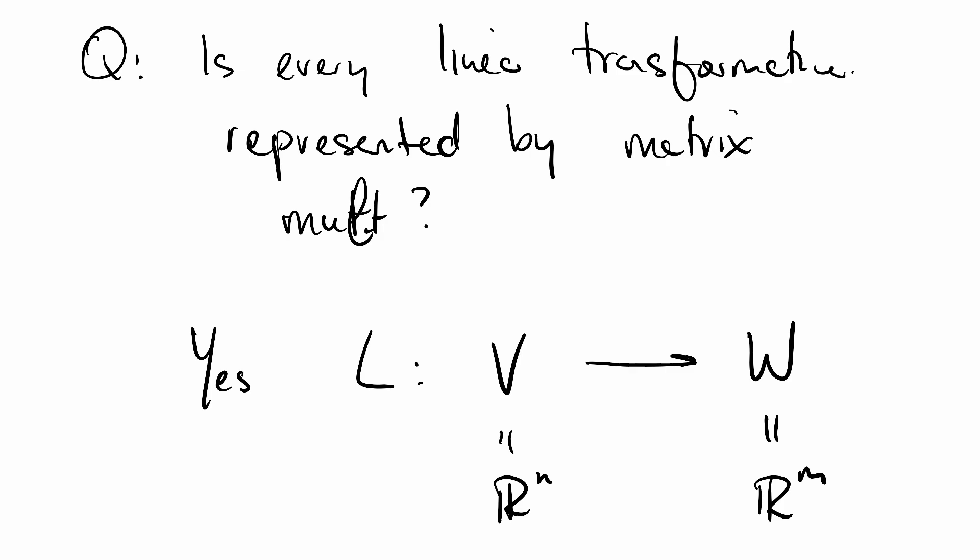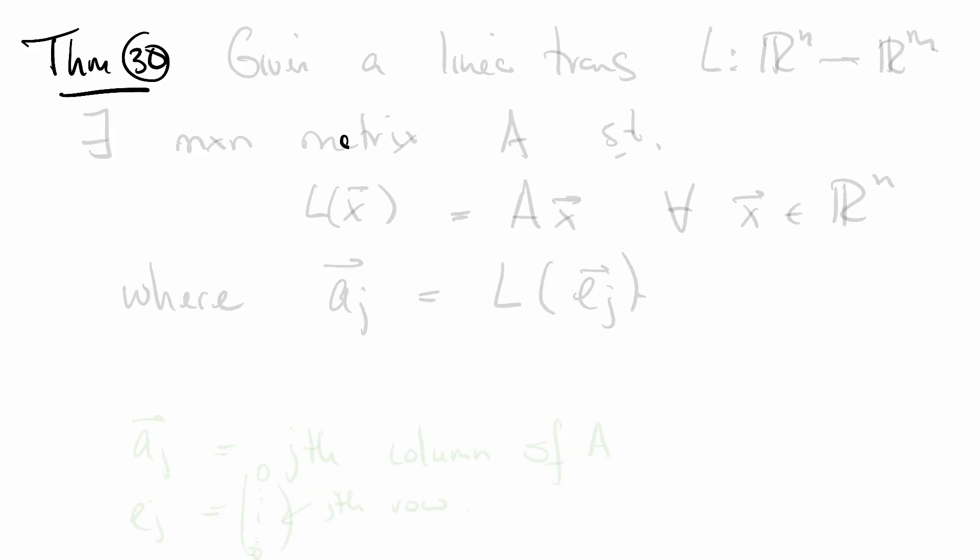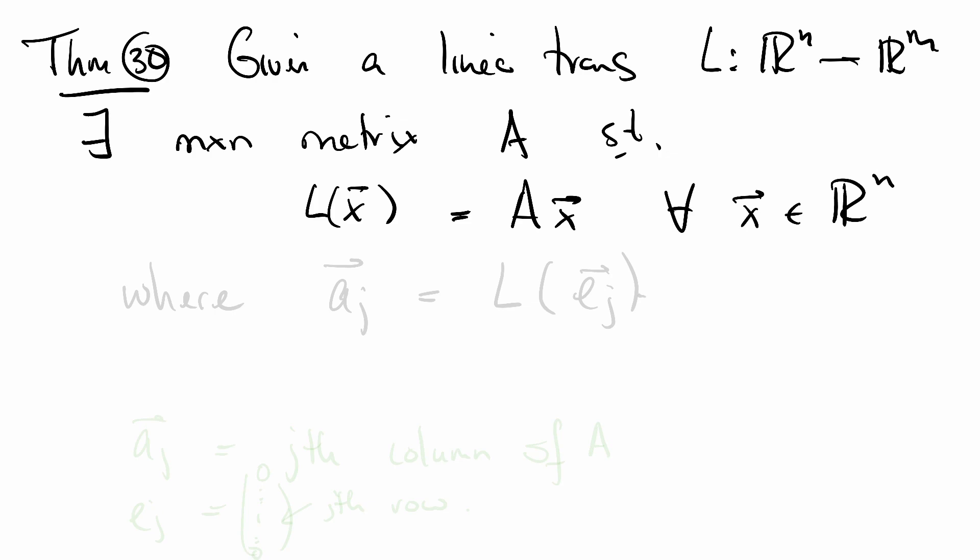Theorem 30: Given a linear transformation L from R^n to R^m, there exists an M by N matrix A such that L applied to X is equal to A times X in terms of vector multiplication for all X in R^n. We can be even more specific.